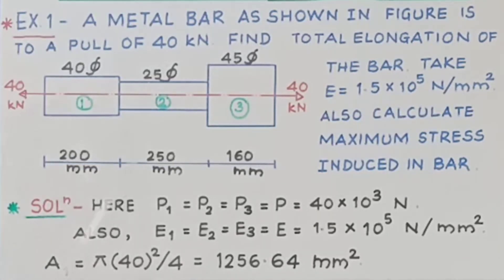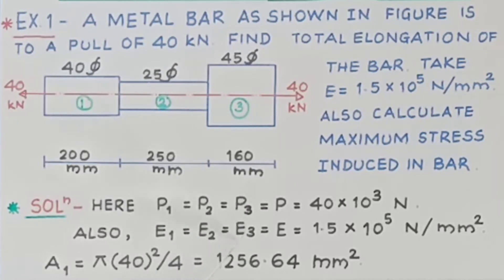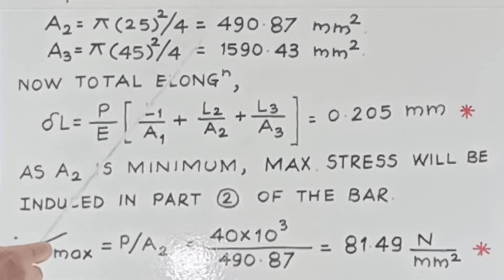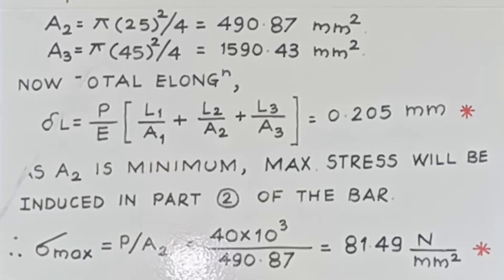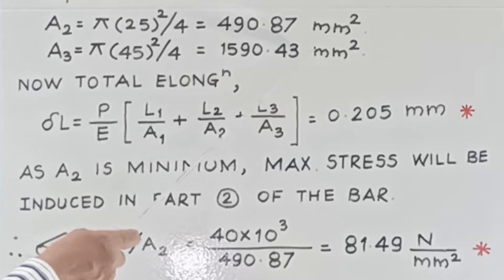This is very simple. P1 = P2 = P3 = P = 40 × 10³ N. The material of all three parts is the same, so E1 = E2 = E3 = E = 1.5 × 10⁵ N/mm². Now let us calculate the cross-sectional areas. As diameter is given: A1 = π × 40² / 4 = 1256.64 mm², A2 = π × 25² / 4 = 490.87 mm², and A3 = π × 45² / 4 = 1590.43 mm².